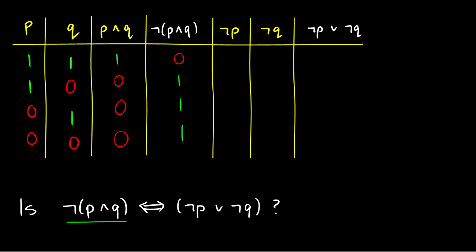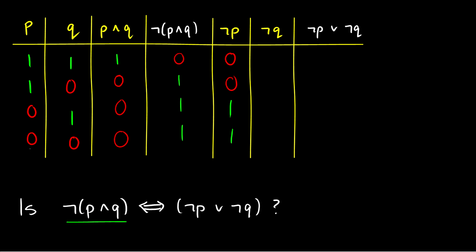Now we have to do ¬P∨¬Q. In order to do that, first we need to do ¬P, then ¬Q, and then put them together with ∨. ¬P is just the opposite values of P. So if P is 1, 1, 0, 0, then ¬P is 0, 0, 1, 1. Similarly, for the Q and ¬Q column, we just reverse the values again. So instead of 1, 0, 1, 0, it's going to be 0, 1, 0, 1.